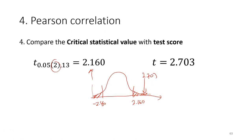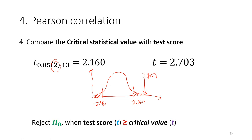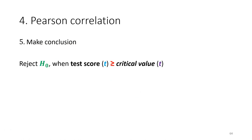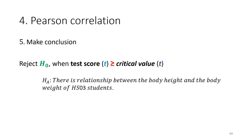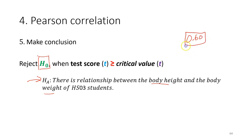Since the t-value falls in the rejection region, we are going to reject the null hypothesis. This means there is a significant relationship between body height and body weight. The r value of 0.6 that we obtained is statistically significant. This relationship is a positive relationship and is a significant relationship.